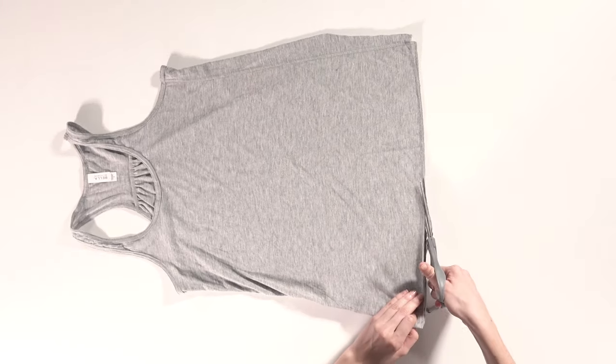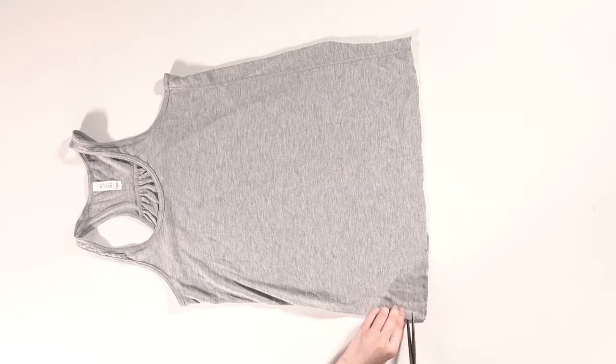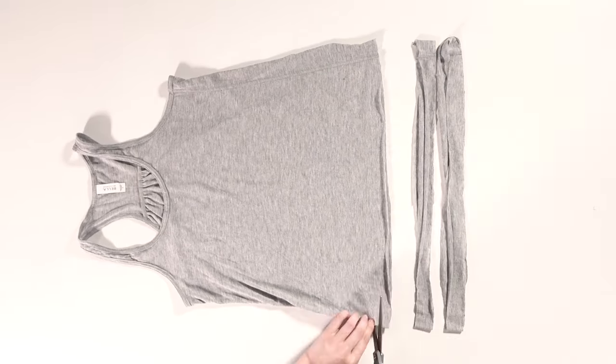The first thing you're gonna do is take your shirt and cut off the bottom hem. Next, you'll cut six strips from the bottom of the shirt about an inch wide.